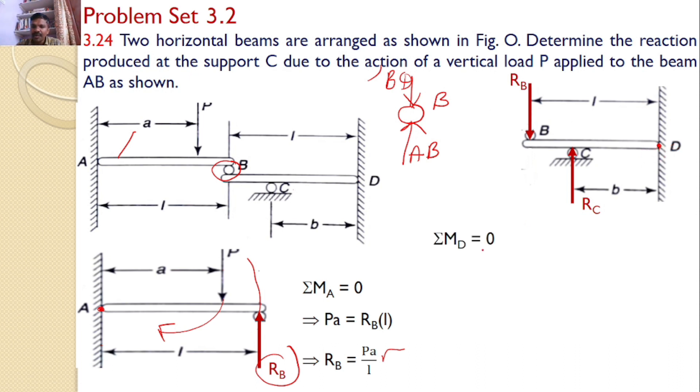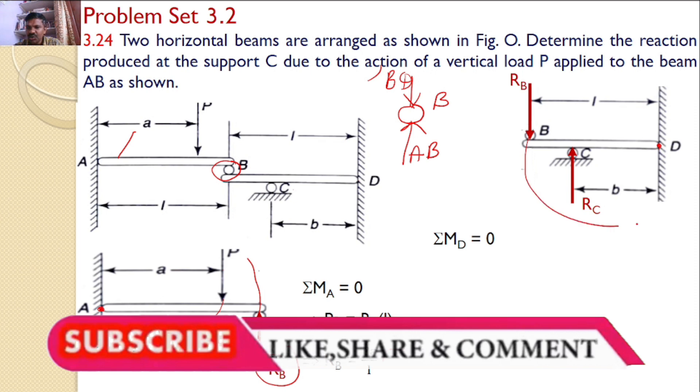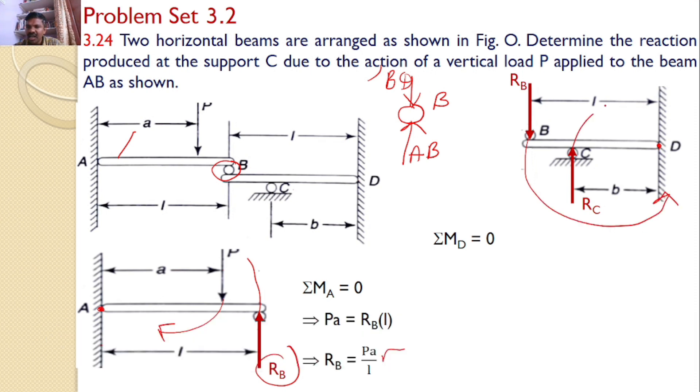So by taking moments about D to maintain equilibrium, sigma MD equals 0. Then RB will introduce a moment in the counterclockwise direction and RC will introduce a moment in the clockwise direction. Hence I can say RB times L equals RC times B.